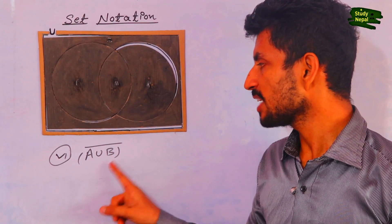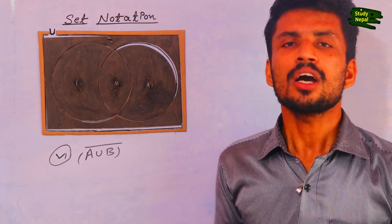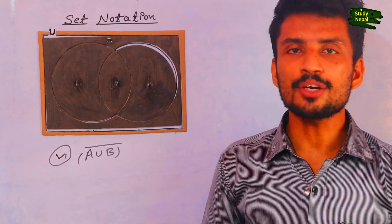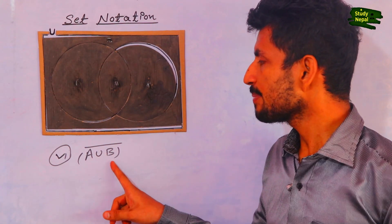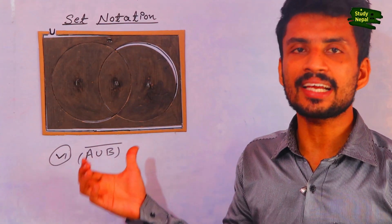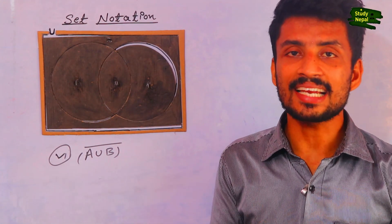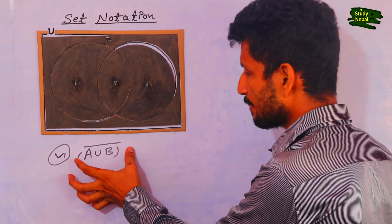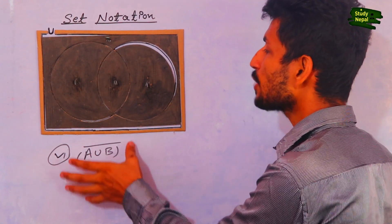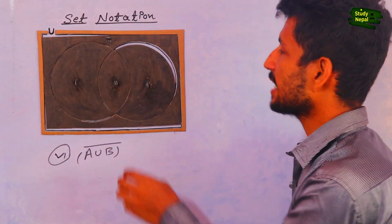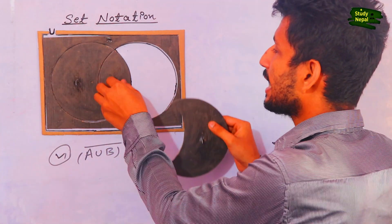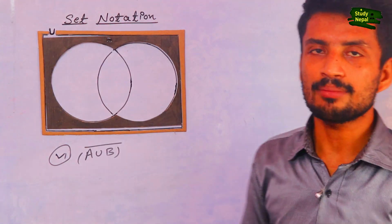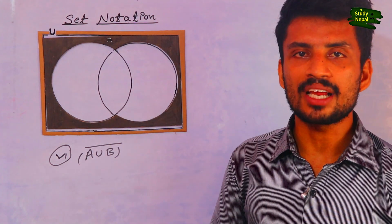Now the sixth topic: A union B complement. Complement means removing the given set from the Venn diagram. So here we remove A union B from the Venn diagram — we remove the A and B portions together — and what remains is the answer of A union B complement. This is the Venn diagram of A union B complement.